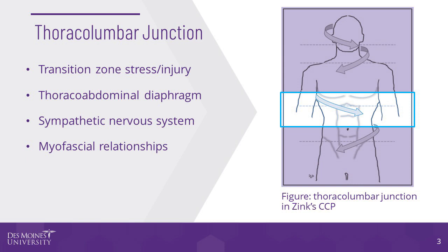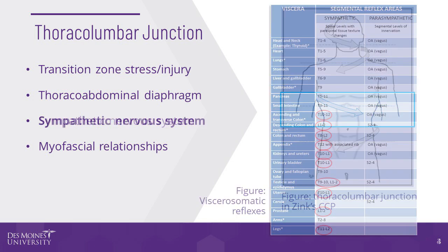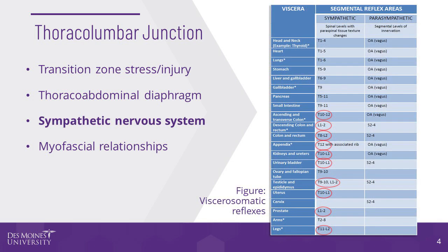The negative intrathoracic pressure created during inhalation greatly assists in venous and lymphatic return to central circulation. Viscerosomatic relationships from the lower intestine and colon and other abdominal pelvic organs exist with the sympathetic centers in the thoracolumbar region.